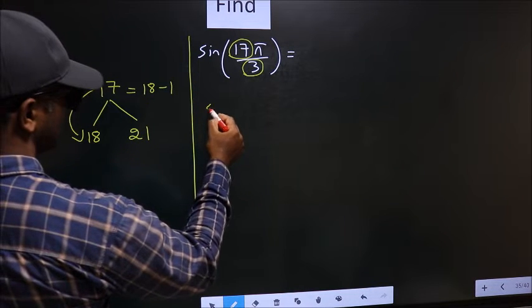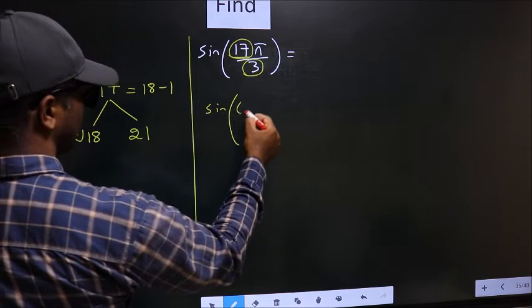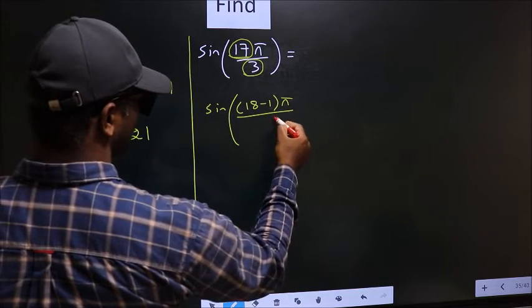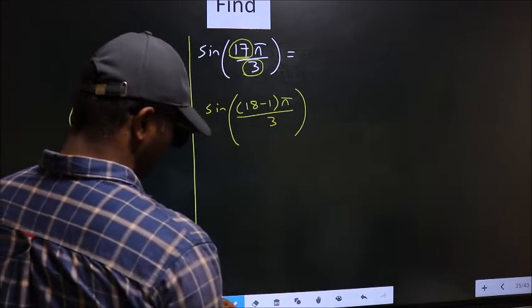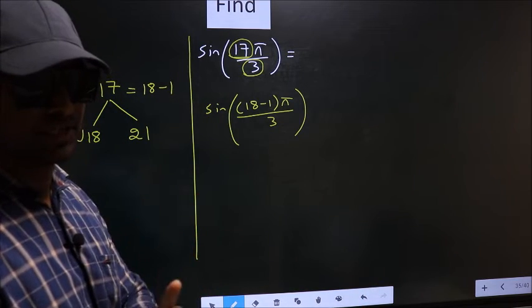So this will change to sine. In place of 17, we write 18 minus 1, pi by 3. This is your step 1.